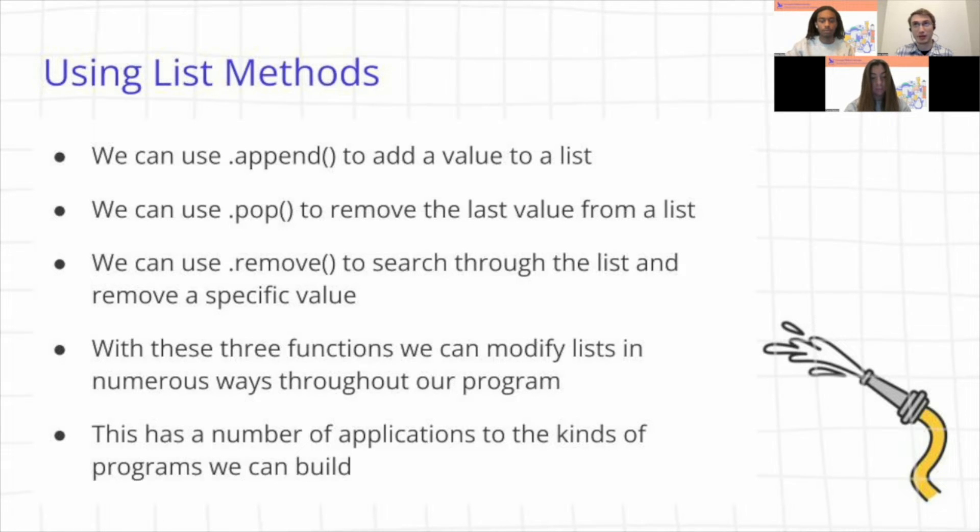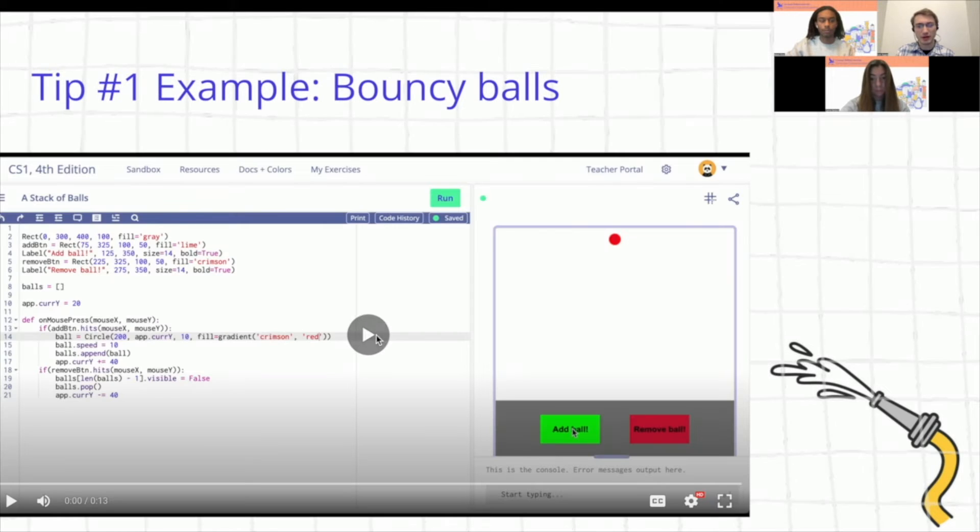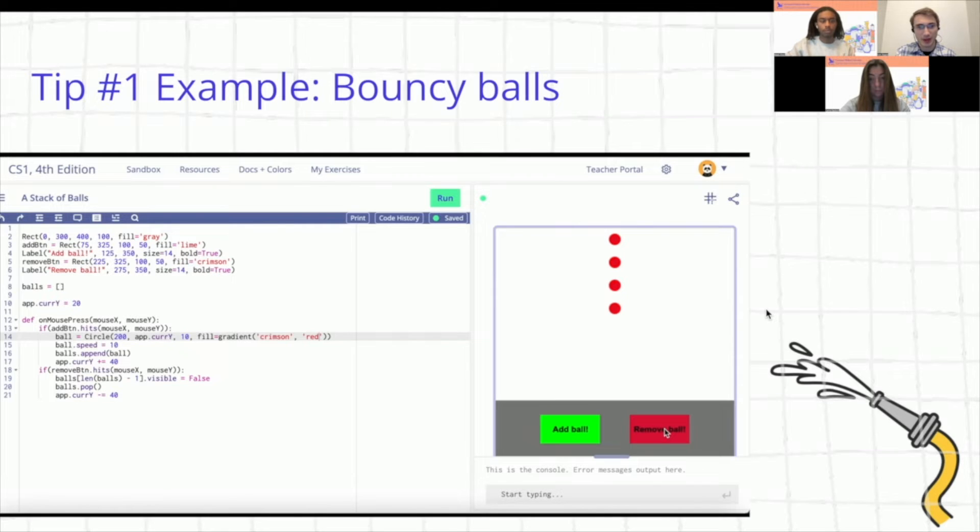We can also use .remove to search through the list and remove a specific value. So if you have a list of strings and maybe you want to remove the word hello, then you just call .remove hello, and that'll search through the list and remove any instances of hello. And so yeah, with these three functions, we can modify lists in a bunch of ways, and that has a number of applications to the kinds of programs that we can build. So for example, we have a video of this little program that I built called bouncy balls, which illustrates some of the methods. So whenever we click the add ball button in the window, then we'll add on another bouncy ball using .append. So you'll be able to see in the code, we add an instance of a ball into the balls list on line eight. And then when we click remove ball, we call the .pop method to remove the ball from our list. So yeah, that's just one small example of one of the many ways that these list methods can work.